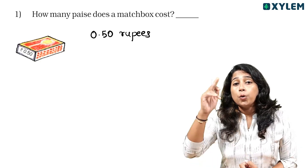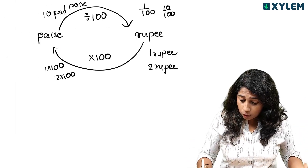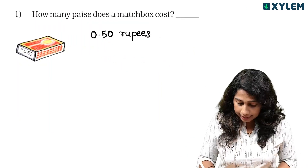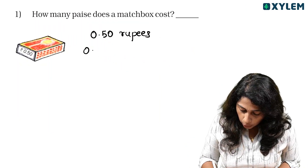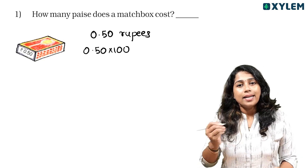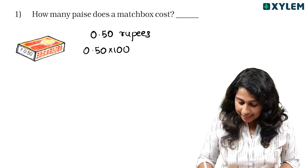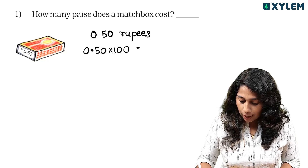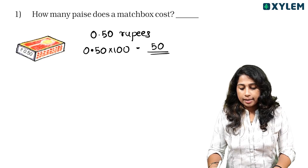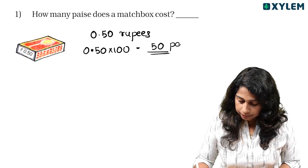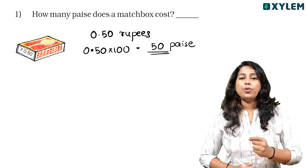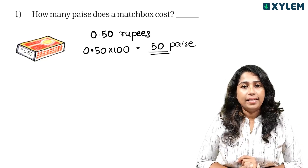For rupees, what are the cost in paise? Correct — 0.50 into 100. 0.50 into 100 is equal to 50 paise.